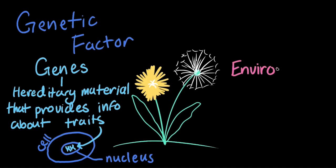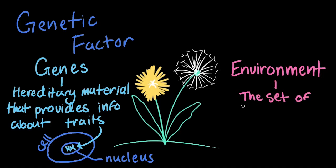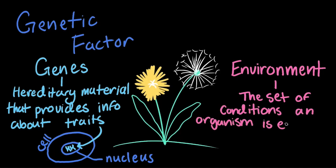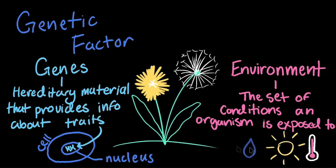But what makes up an organism's environment? The environment is the set of conditions an organism is exposed to during its life. For our dandelion, this includes temperature, how much light and water it gets, and which nutrients are present in the soil where it grows.